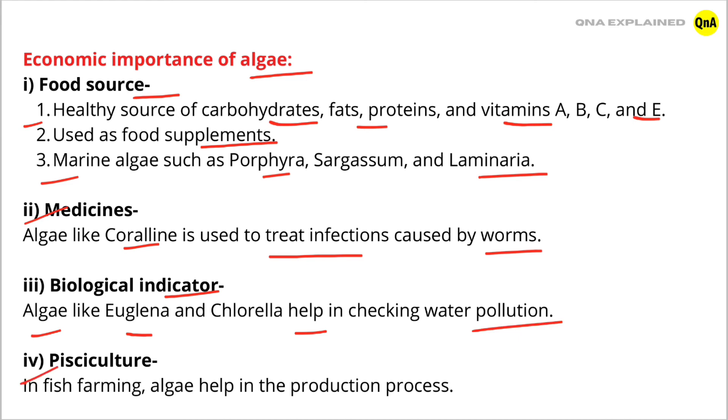Pisciculture: In fish farming, algae helps in the production process.